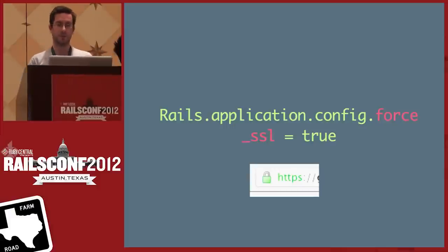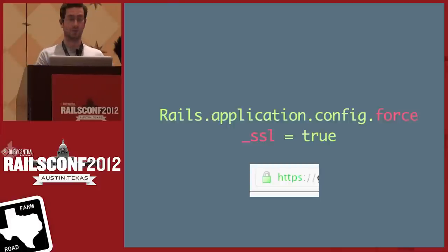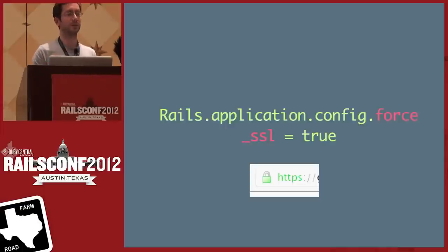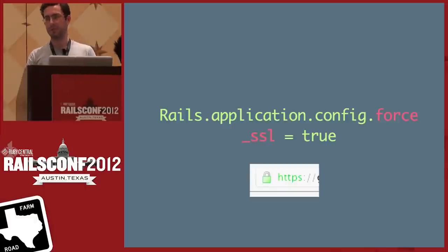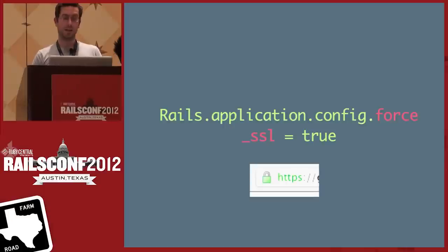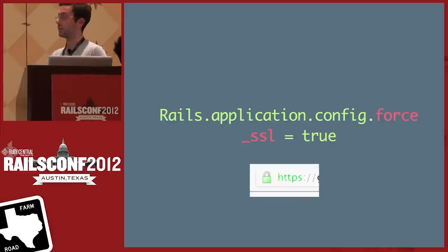The simplest way to combat session theft is to send everything over SSL. Rails has a config option force_ssl which ensures every request is over SSL — if someone makes a non-SSL request, they'll be redirected to the secure page. It can seem like a pain to set up initially, but if you do one thing to make your site more secure, this is probably it. It used to be common to only do login actions over SSL, but the cookie is sent on every request, so it's just easier to do it everywhere.